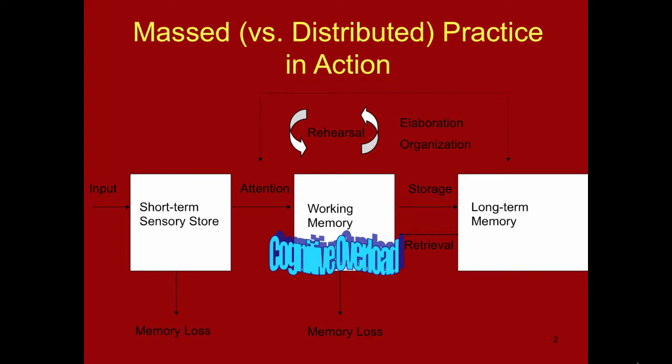As a result of this overload, some of the information simply spills out. Think about a sponge. If you douse it with water all at once, some of it simply rolls off. But if you pour water onto a sponge slowly, you can get a lot more water in.